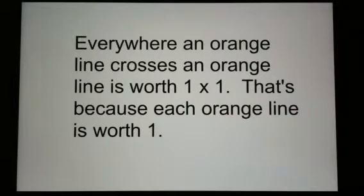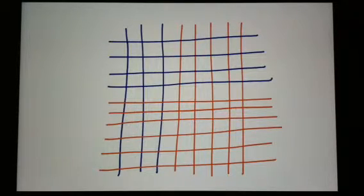Here's where the intersections come in. Everywhere an orange line crosses an orange line is worth 1 times 1. That's because each orange line is worth 1. So I'm going to mark where my orange lines cross my orange lines. Here's one right here.